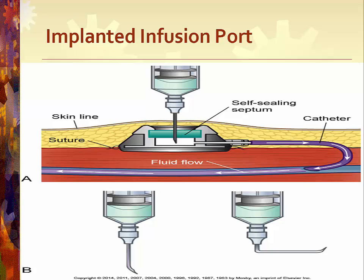To access implanted port devices, a special Huber needle with a deflected tip is used to prevent damage to the rubber septum that could make the port useless. Huber needles are also available with the tip at a 90-degree angle for longer infusions.